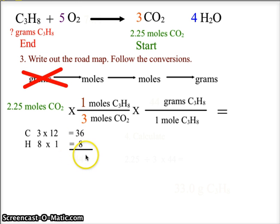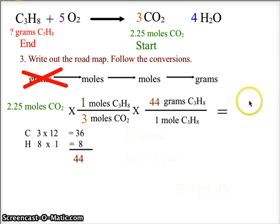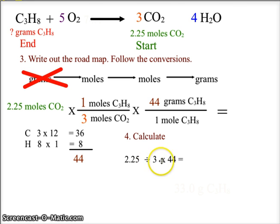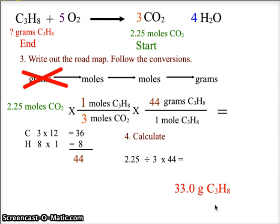One mole equals the molar mass: 3 carbons × 12 = 36, plus 8 hydrogens × 1 = 8, giving a molar mass of 44 g/mol for propane. The calculation is 2.25 ÷ 3 × 44, since the 3 is in the denominator and 44 is in the numerator. This gives 33.0 grams of propane. Hopefully this gives you insight into converting from moles to grams using stoichiometry from a balanced chemical equation. Keep working on your chemistry!